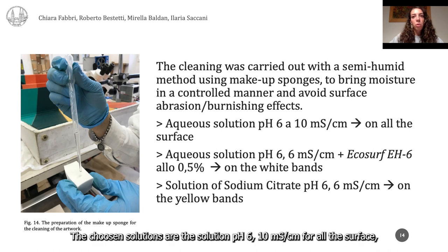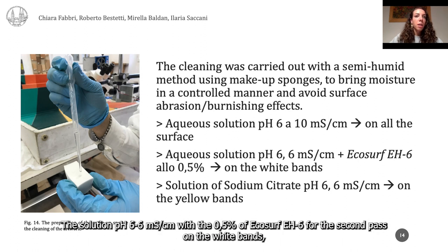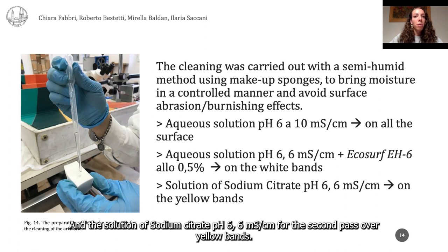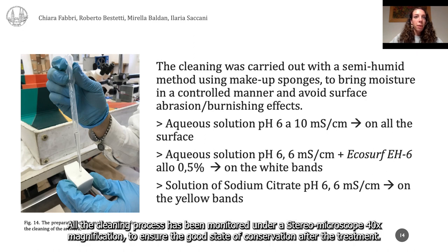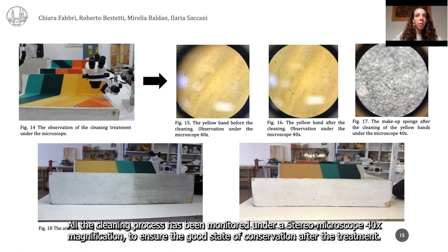The chosen solutions were: solution pH 6, 10 mS for the entire surface; solution pH 6, 6 mS with rinse at pH 6 for the second pass on the white bands; and sodium citrate solution pH 6, 6 mS for the second pass over the yellow bands. All cleaning processes were monitored under a microscope at 7.5x magnification to ensure the good state of conservation after treatment.